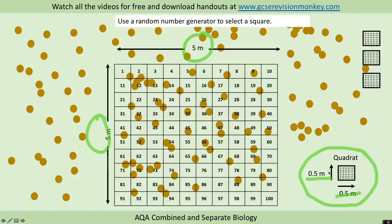And we need to choose where to place our quadrat within this grid. So it would take too long to do all 100 squares and count the number of daisies in each square. So what we use is a random number generator to select a square.